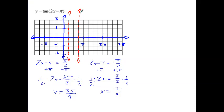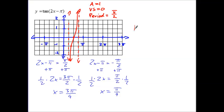Our asymptotes are at pi over 4 and 3 pi over 4 — very close together this time. Our dilation is 1 and our vertical shift is 0. Our period is pi over 2 — keep that in mind for the domain. Our 0 point is right in the center between the two asymptotes, negative 1 to the left, and positive 1 to the right. The domain is x such that x is not equal to pi over 4, with the next asymptote after another pi over 2, so plus pi over 2 times k. The range is all real numbers.